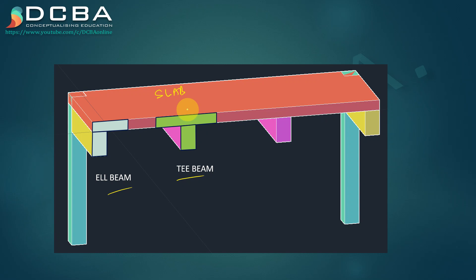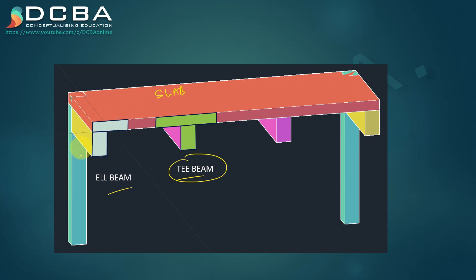Monolithic construction means that when concrete is being poured for the slab and for the beam, it is poured together — not beam first and then slab. A monolithic construction means your slab and beam are cast together. In such a case you can take advantage of T-beam and L-beam. L-beams are only at the corners, and T-beams are in between.